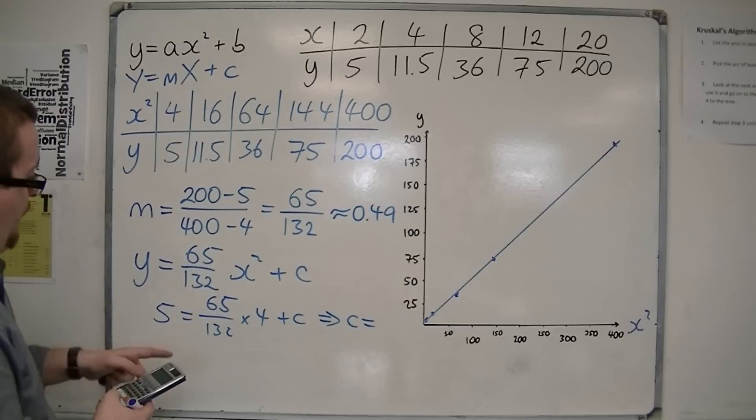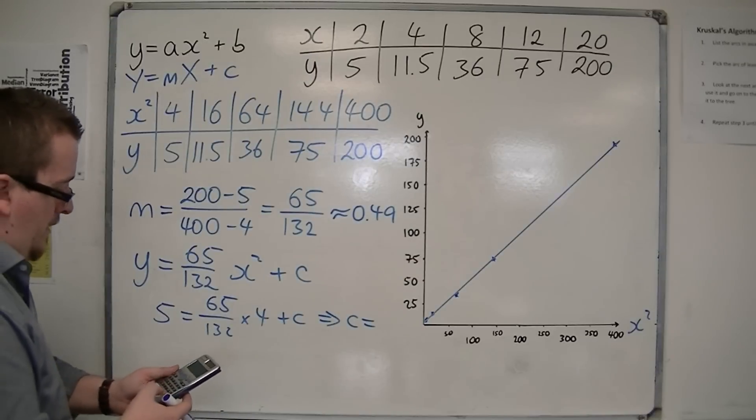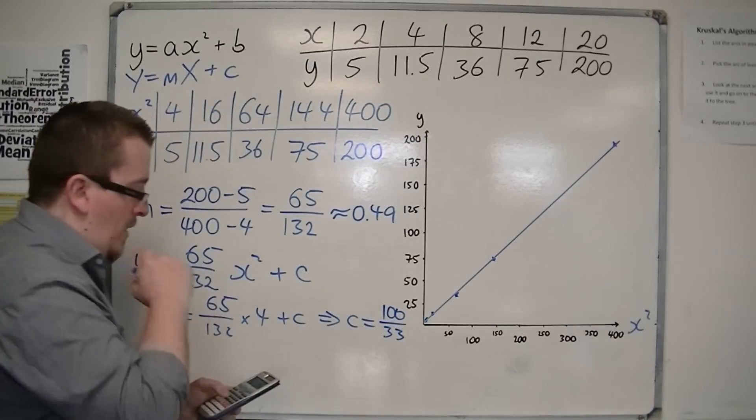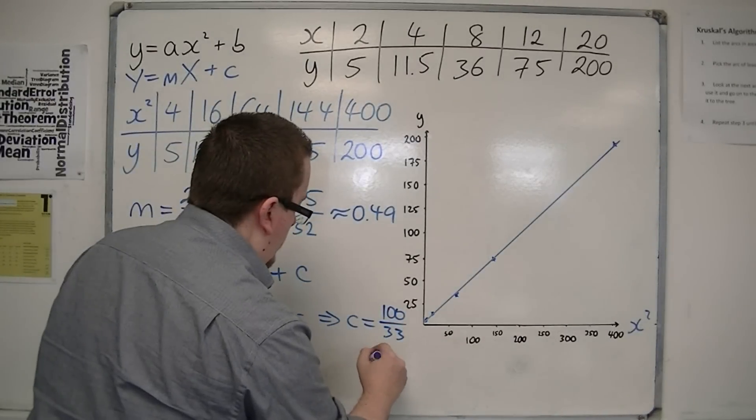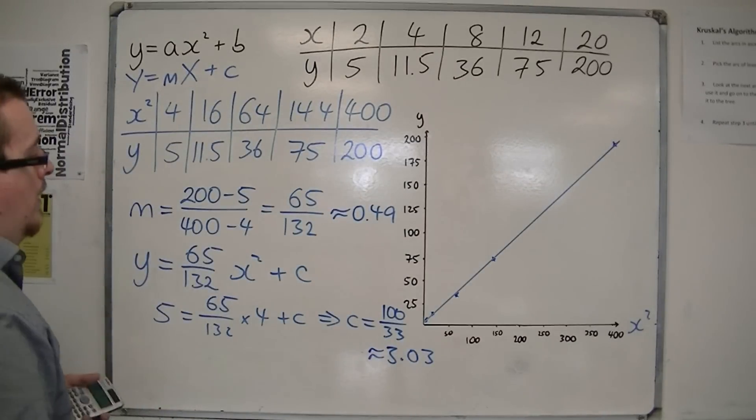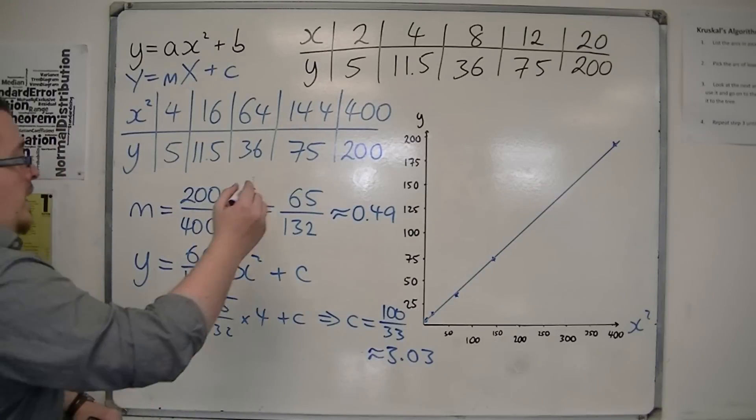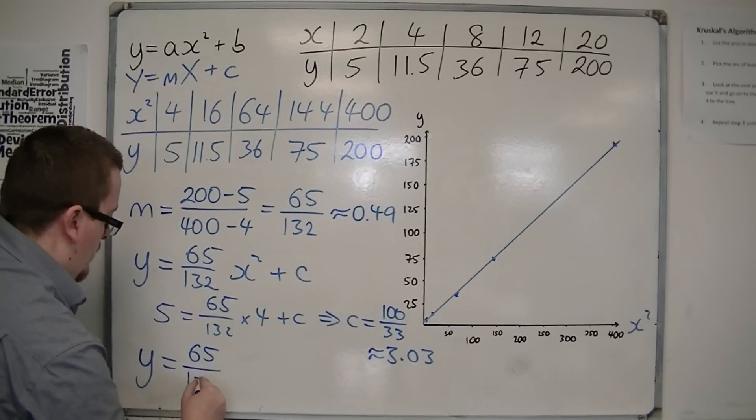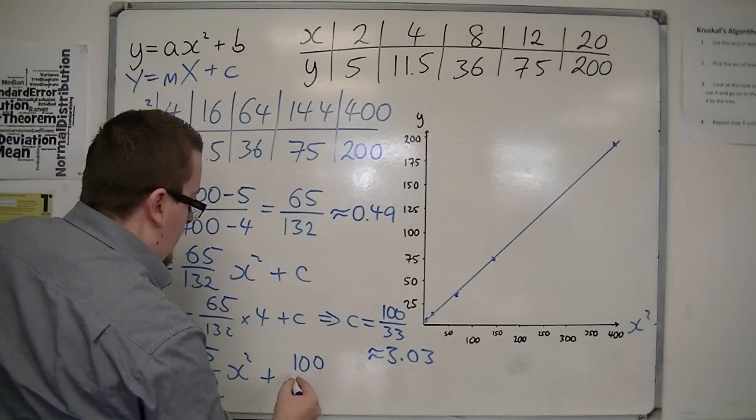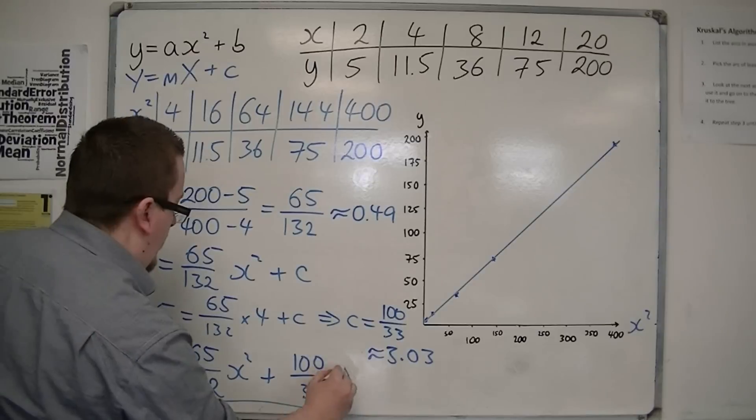So c is 5, take away this thing. So 5 take away 65 times 4, divided by 132, which is 100 over 33, which is approximately 3.03 to two decimal places. So the equation that I have is y is equal to a x squared plus this value, 100 over 33. And that will be the equation that I can work with here.